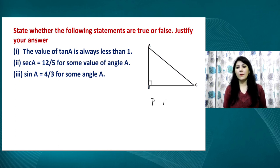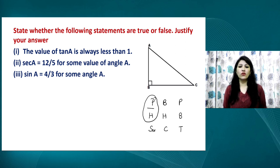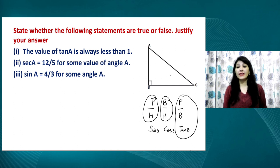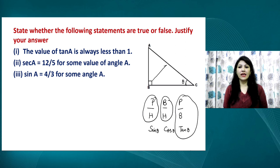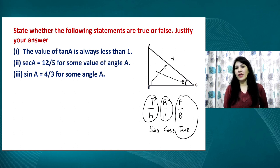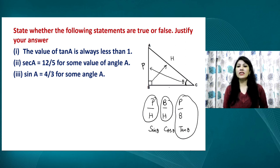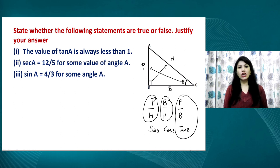We discussed the mnemonic 'Pandit Bhadri Prasad — Tona, Chandi, Tola' to easily remember that sine theta equals perpendicular upon hypotenuse, cos theta equals base upon hypotenuse, and tangent theta equals perpendicular upon base. If we introduce the angle C as theta, then angle B is 90 degrees. The side opposite 90 degrees is the hypotenuse, the side adjacent to the base angle is the base, and the opposite side is the perpendicular.